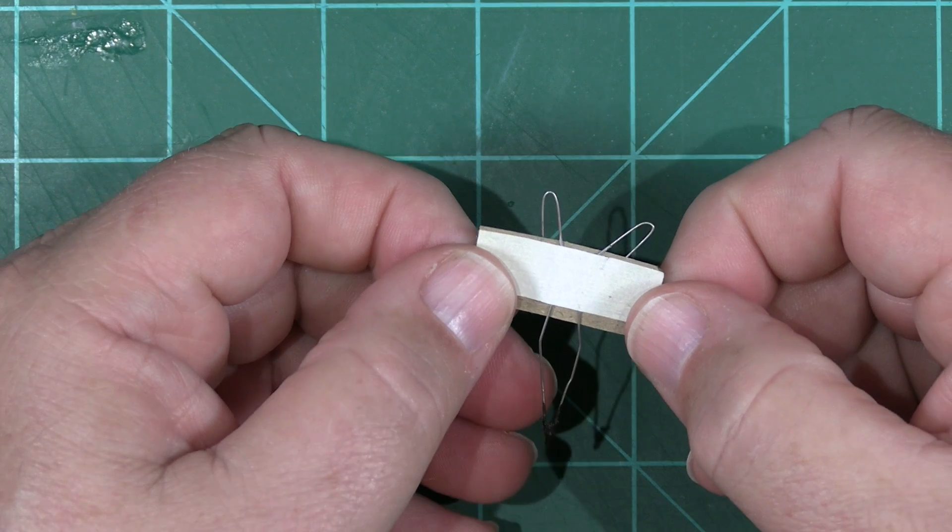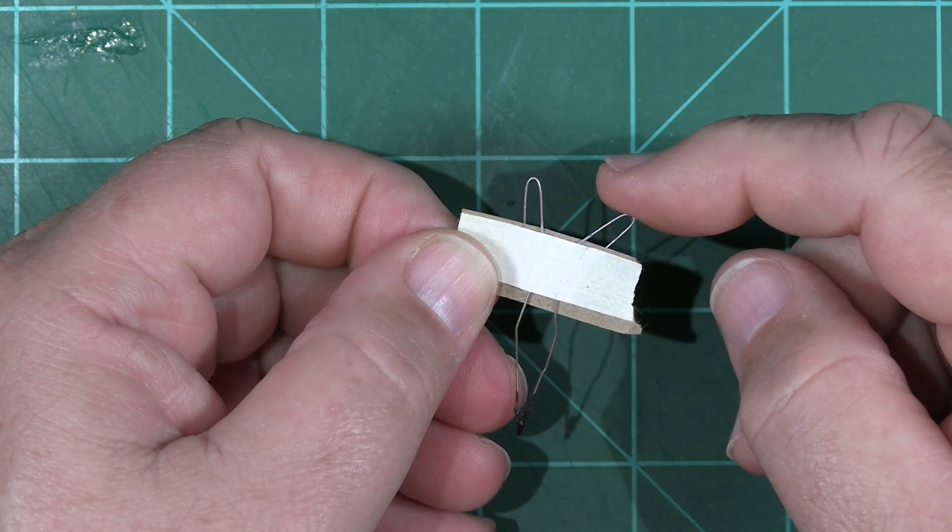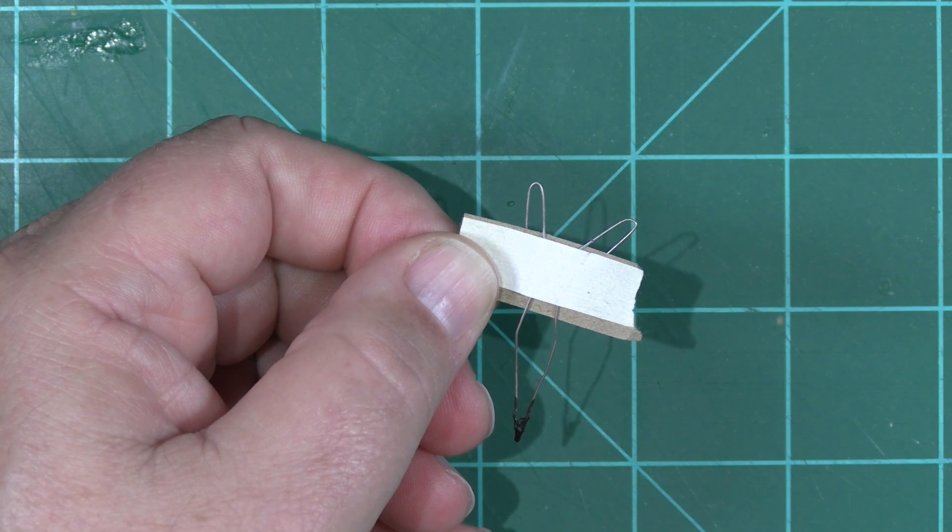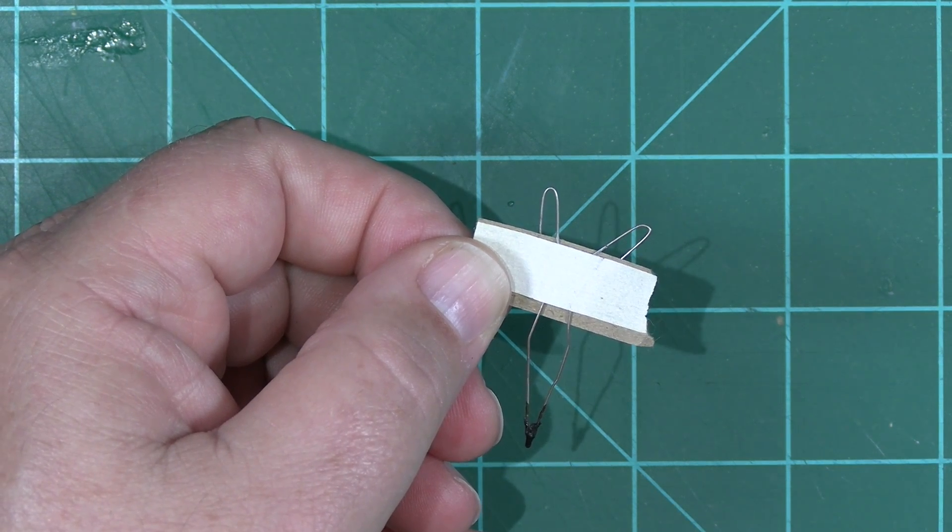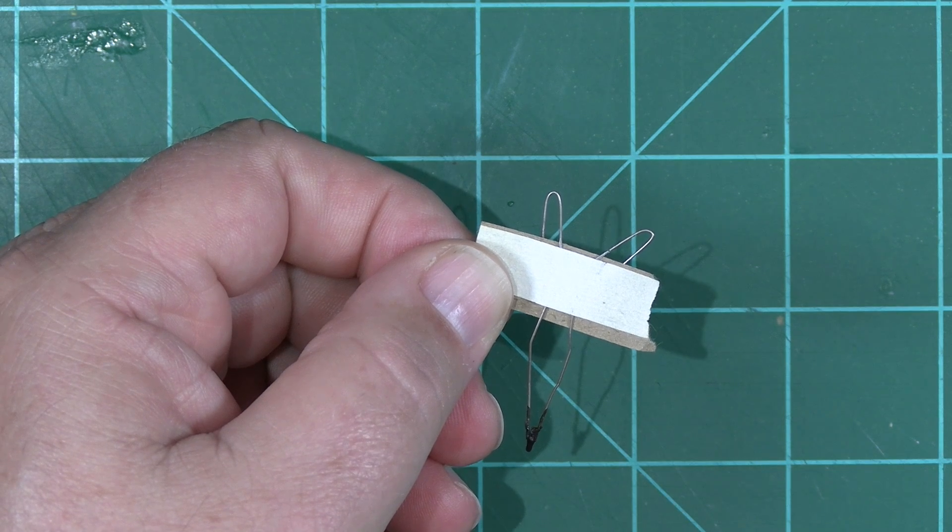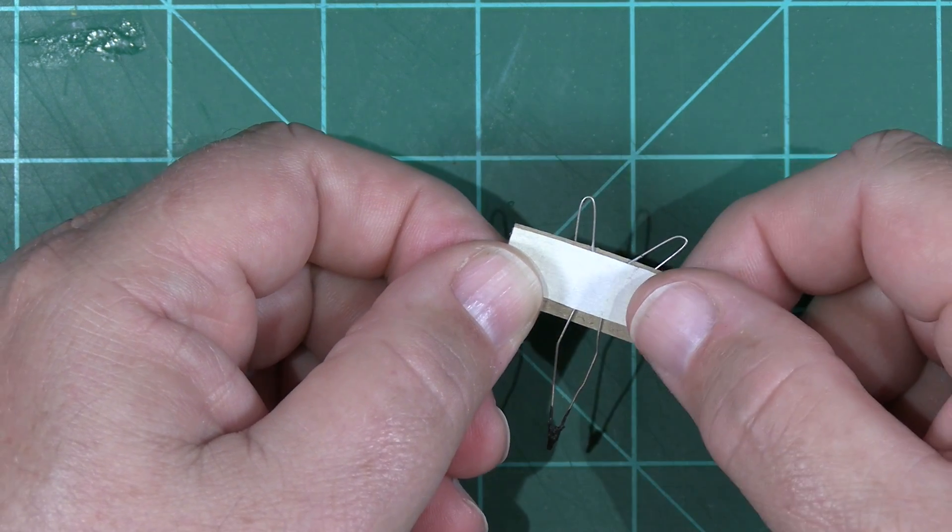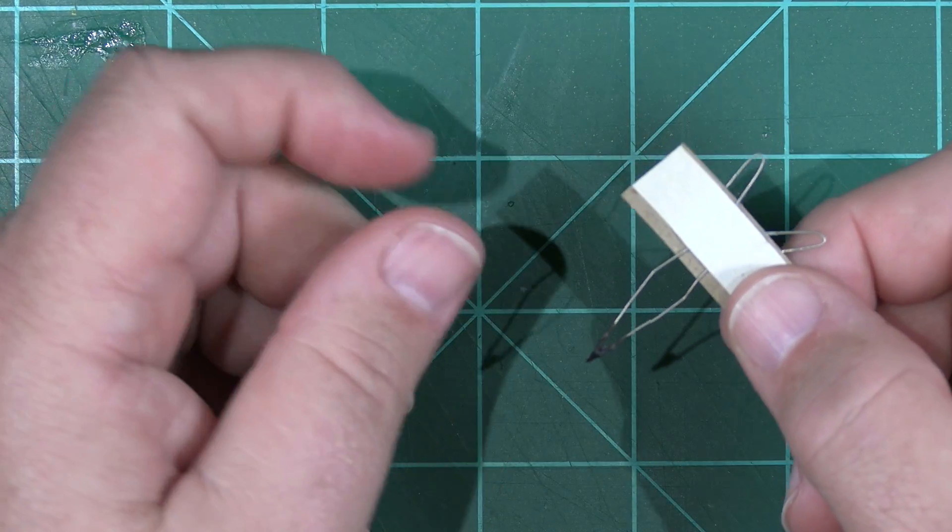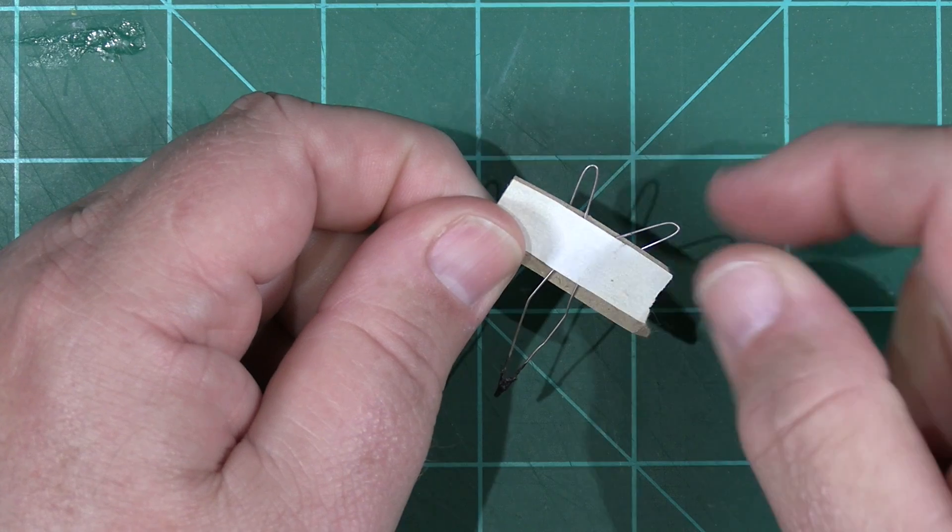First, it allows for a more positive mechanical connection between each igniter lead and the launch control system. Your igniter leads will be less likely to slip off when you walk away from the launch pad. Second, it provides a more robust electrical connection. Bill Stein of Estes showed me this trick many years ago, and he calls these bunny ears.